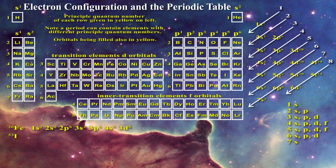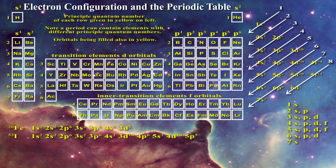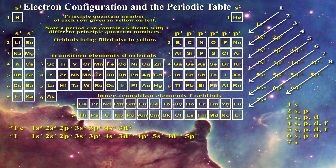Similarly, iodine has an atomic number of 53 and these 53 electrons are arranged as follows: 1s2, 2s2, 2p6, 3s2, 3p6, 4s2, 3d10, 4p6, 5s2, 4d10, 5p5.